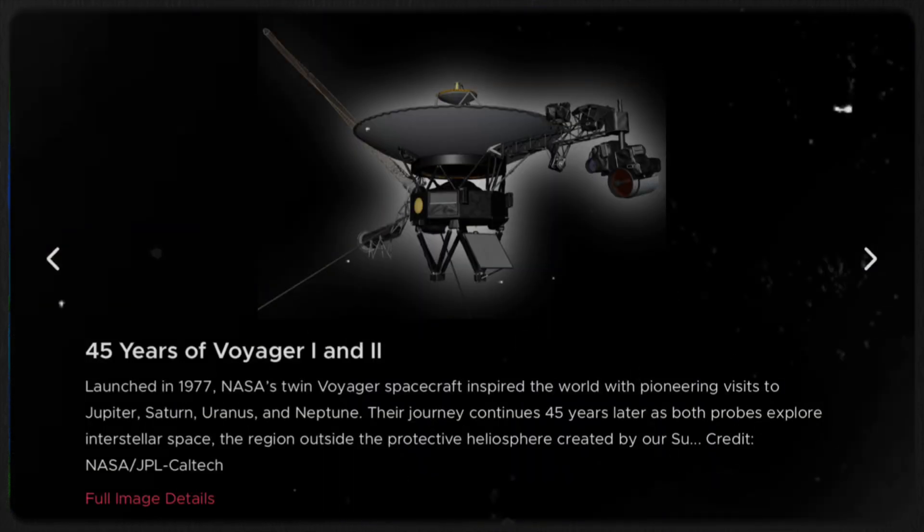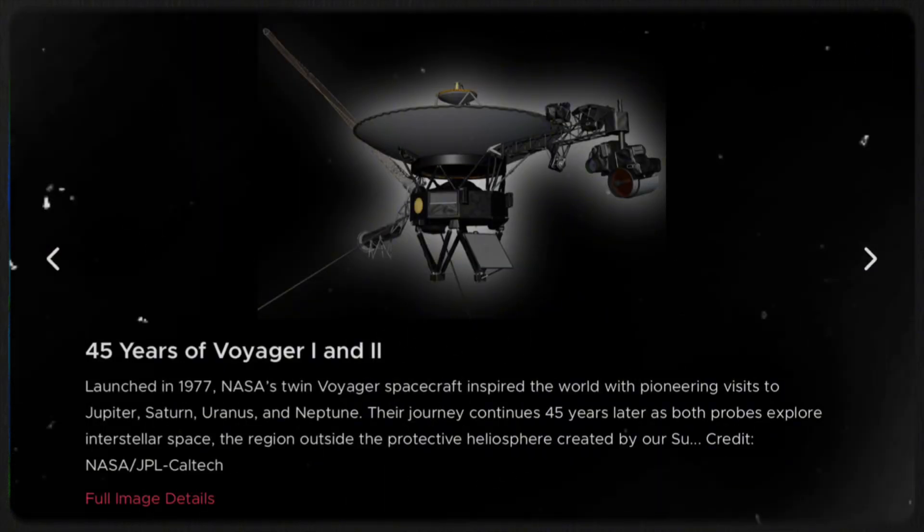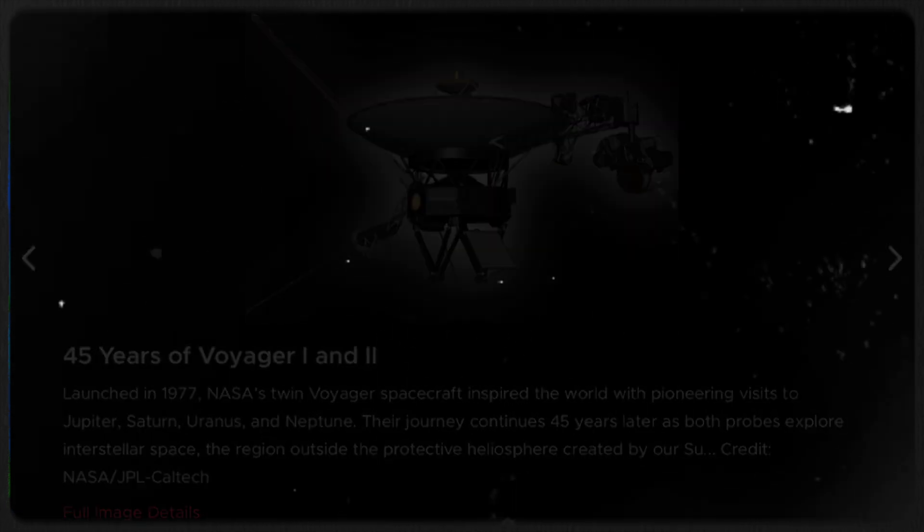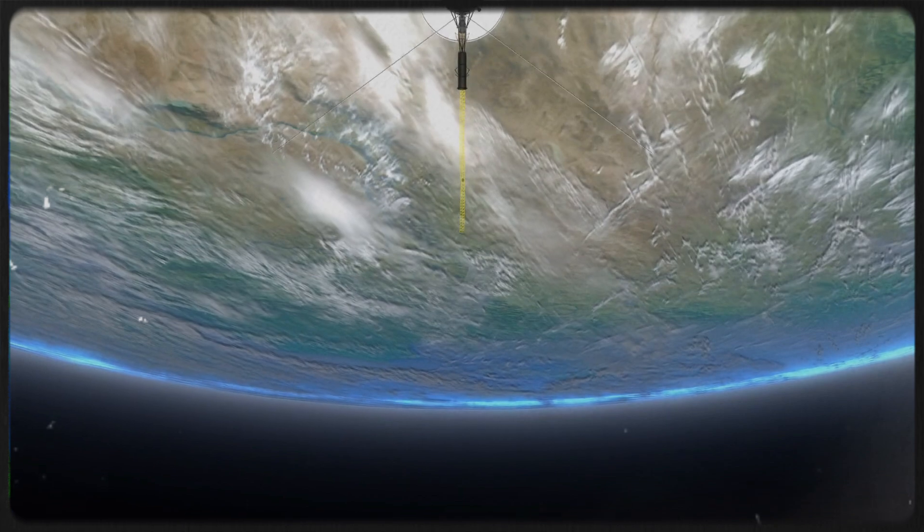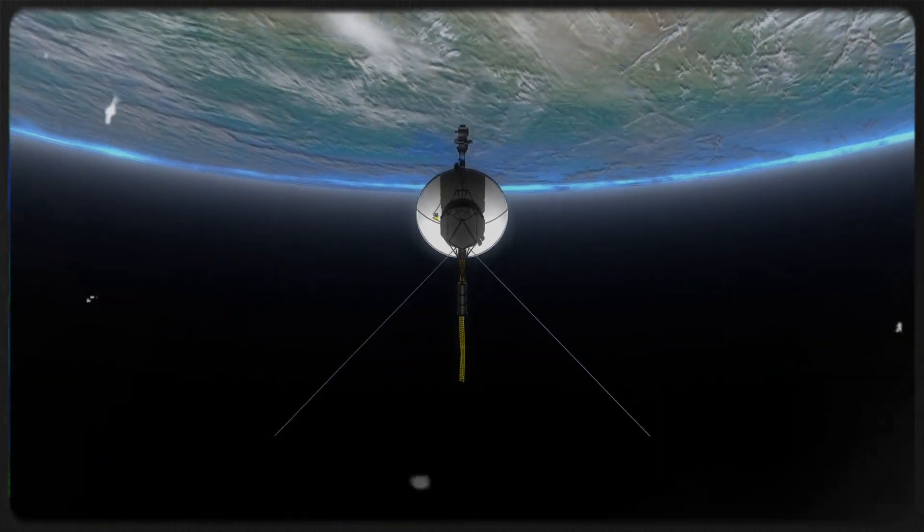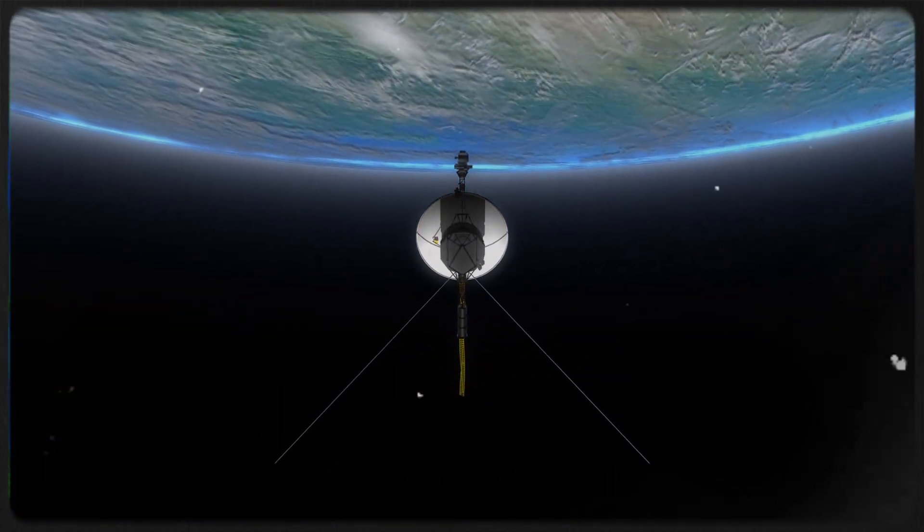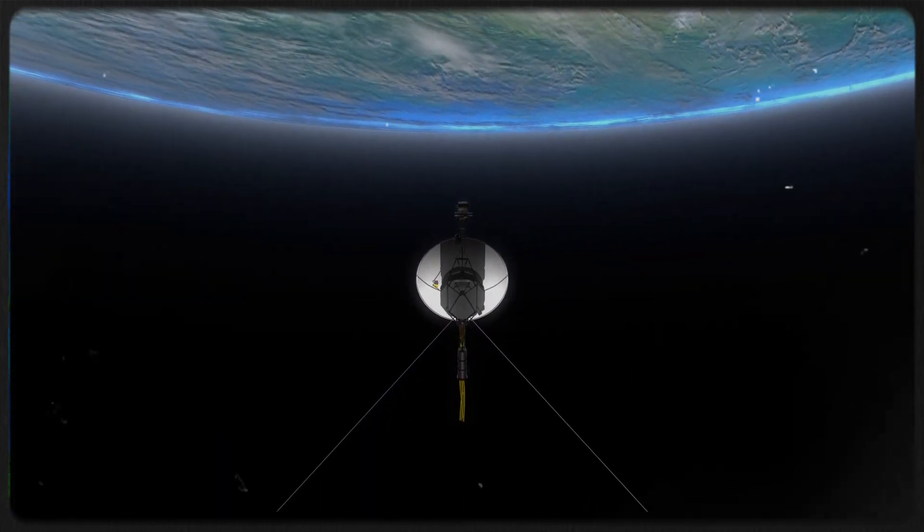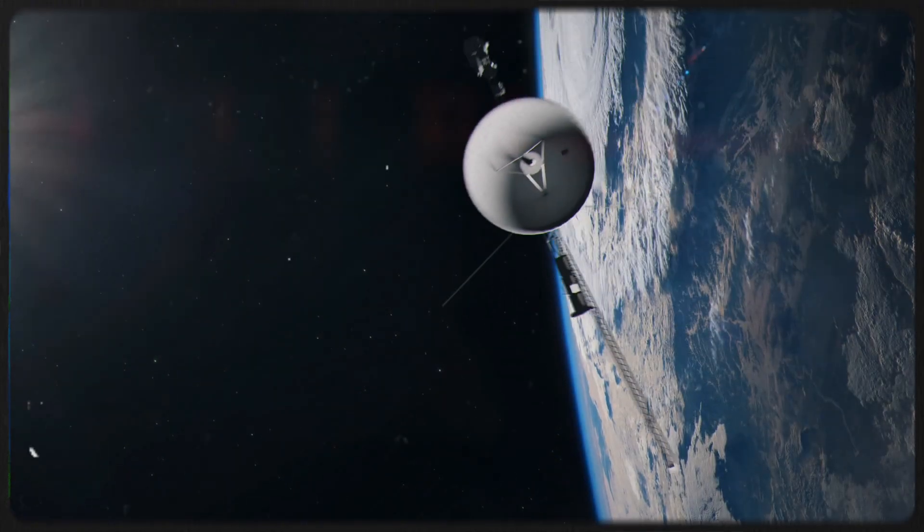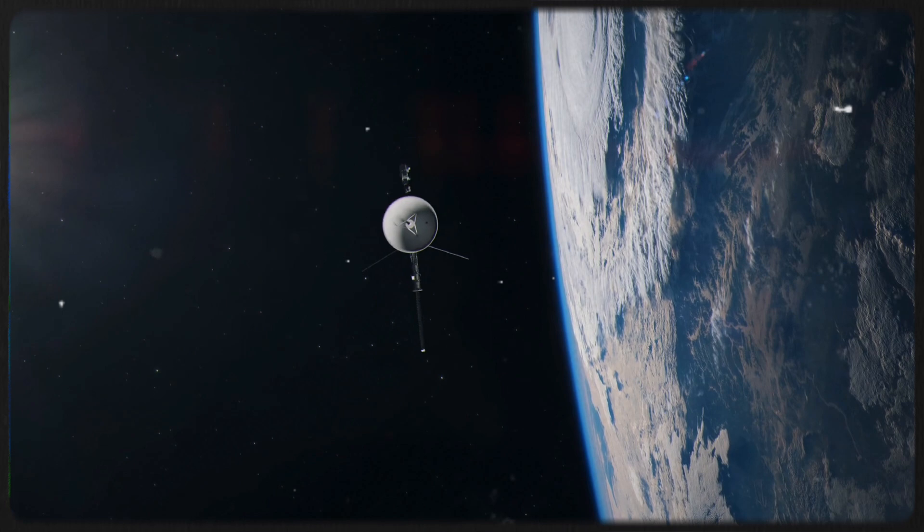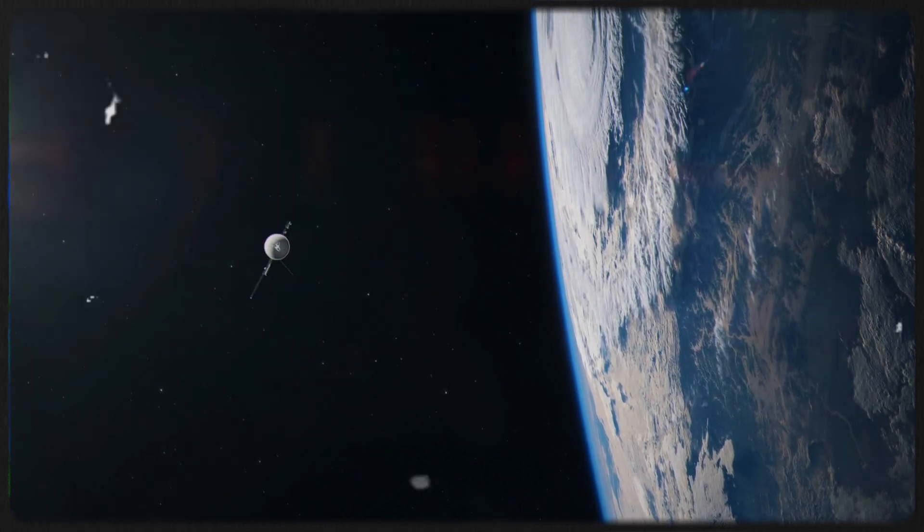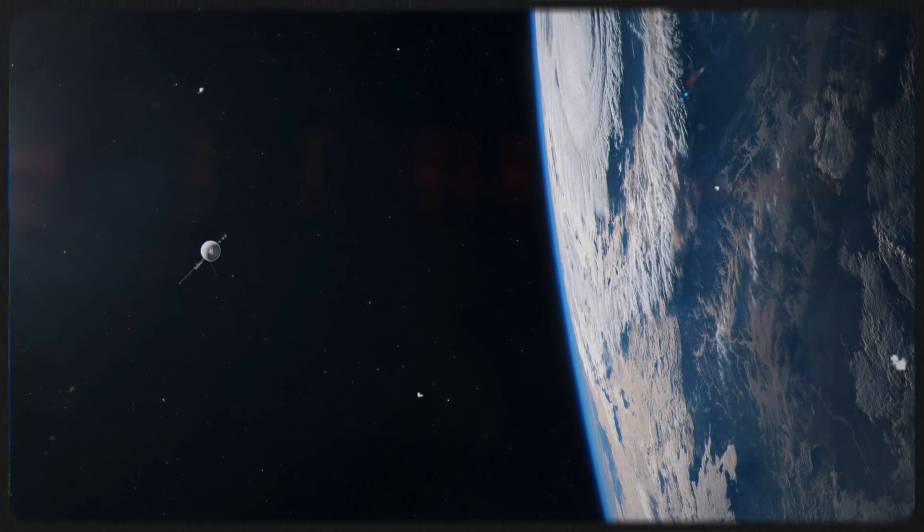Launched in 1977, the Voyager spacecraft were equipped with technology that now seems primitive compared to today's standards. Yet, Voyager 1 continued to function and transmit valuable data back to Earth for over four decades, a feat that is nothing short of remarkable. The ability of these early spacecraft to endure and perform such extraordinary tasks with relatively basic technology highlights the incredible ingenuity and resilience of the engineers and scientists of that time.